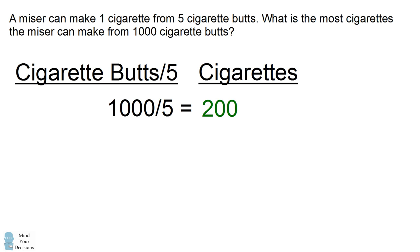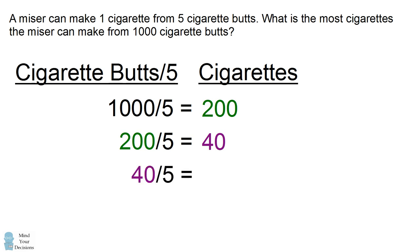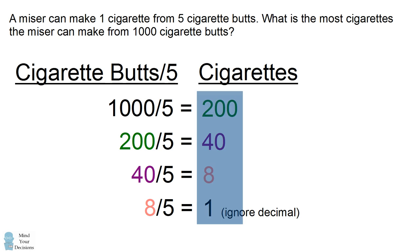Some people think this is the answer. But if you think a little creatively, he can now smoke these 200 cigarettes to get 200 more cigarette butts. From those 200 cigarette butts, he can then craft another 40 cigarettes. Why stop there? He can smoke these 40 cigarettes to get 40 more cigarette butts, then craft another 8 cigarettes. And if he smokes these 8 cigarettes, the number 5 goes into this one more time. We can get the total by adding these numbers up: 200 plus 40 plus 8 plus 1, which gives us the answer of 249 cigarettes.